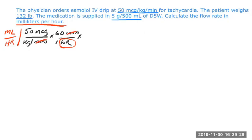Another thing we know we're going to have to cancel out is kilograms. Since we have the patient's weight in pounds, we can cancel out the kilograms using a conversion factor. We can say that one kilogram is equal to 2.2 pounds. So here we can cancel out kilograms, and we know our patient weighs 132 pounds.